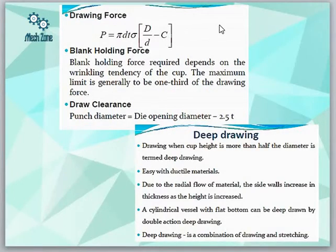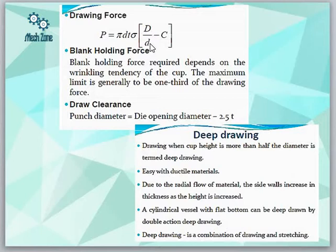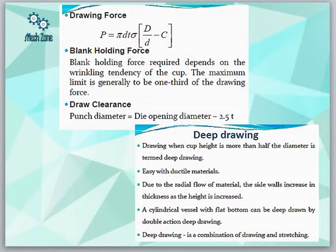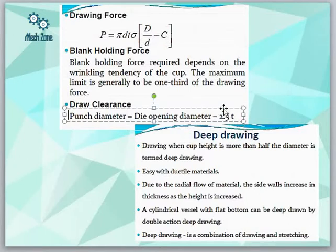For the forces involved in the drawing process, the formula is: F = π × d × T × σ × (D/d − C), where small d is the diameter of the cup, T is the thickness, σ is the stress developed, capital D is the diameter of the blank, and C is the clearance. Clearance is very important. The drawing clearance formula is: punch diameter equals die opening diameter minus 2.5 times T. The clearance is measured in terms of thickness.